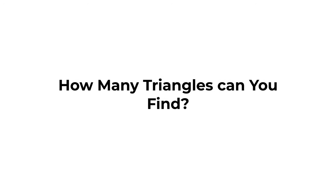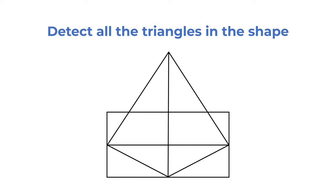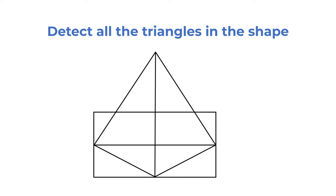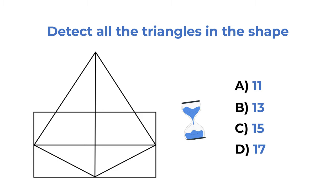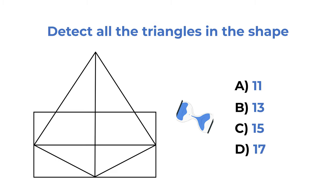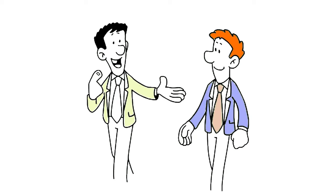Here's a question that was recently introduced in the test — and I would need your help to determine if I answered it correctly. You're presented with a very unusual shape and need to detect all the triangles that are part of it. Your four possible choices are: choice A, 11; choice B, 13; choice C, 15; choice D, 17. Give yourself 10 to 20 seconds to count all the triangles.